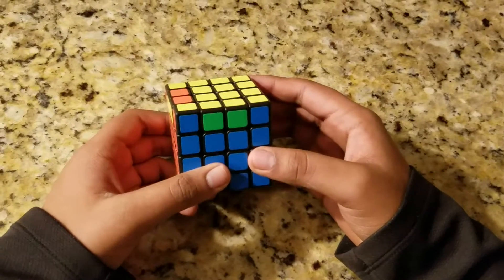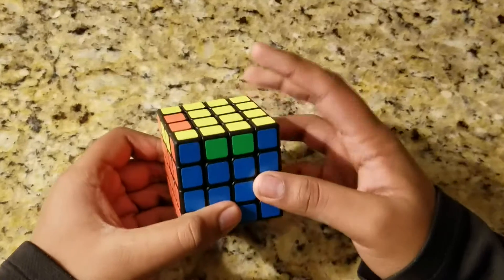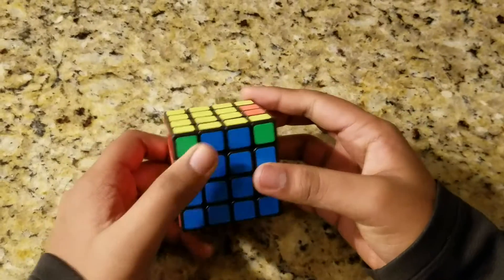So, let's start with PLL parity. What you want to do is you want to hold the parity towards u and on the opposite side.